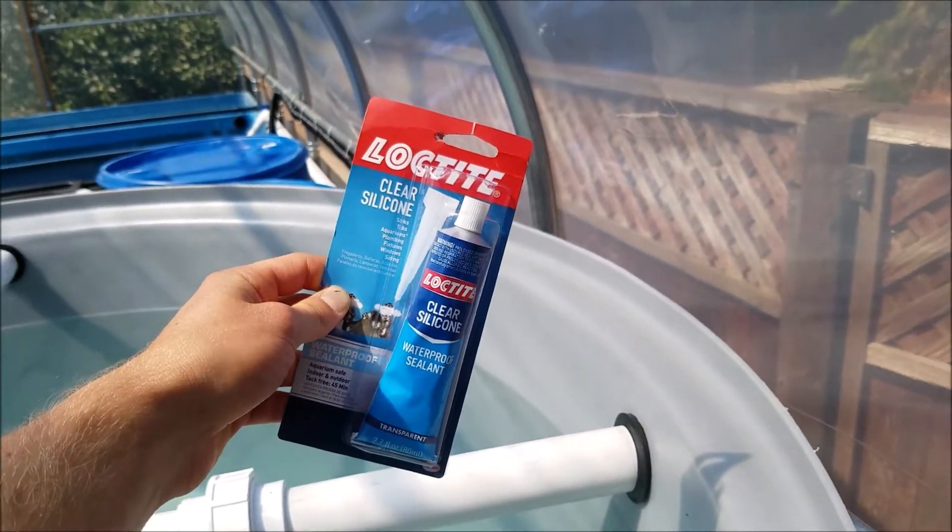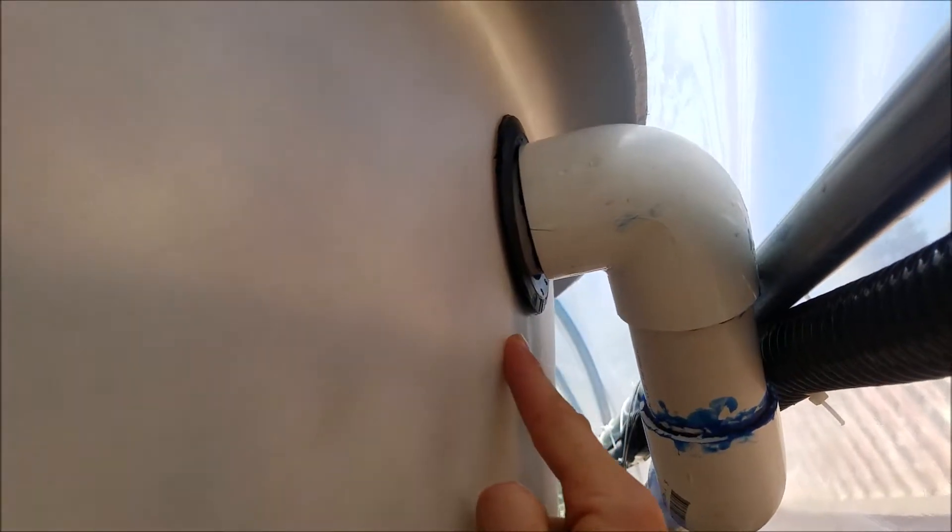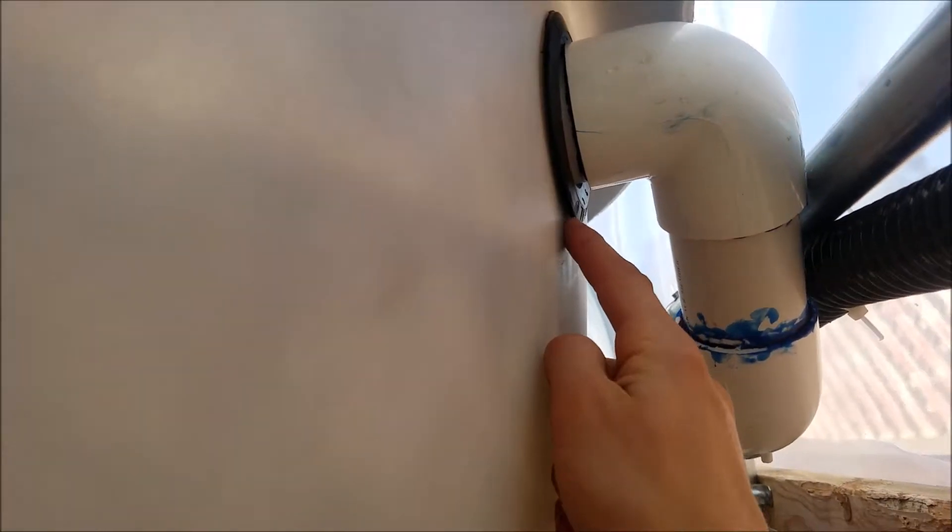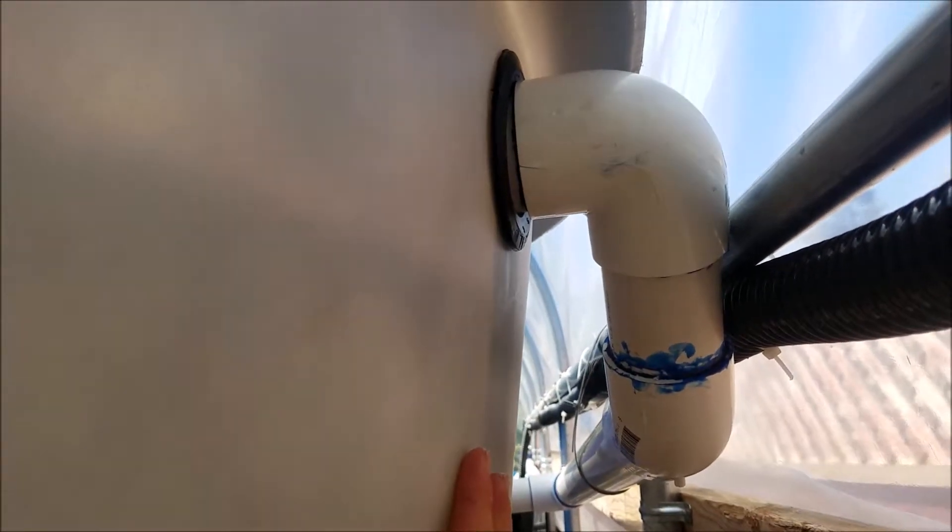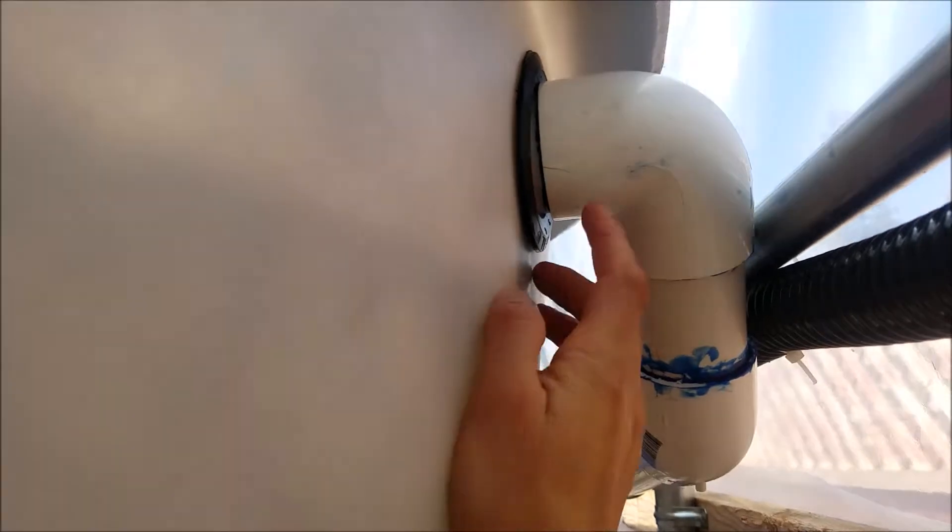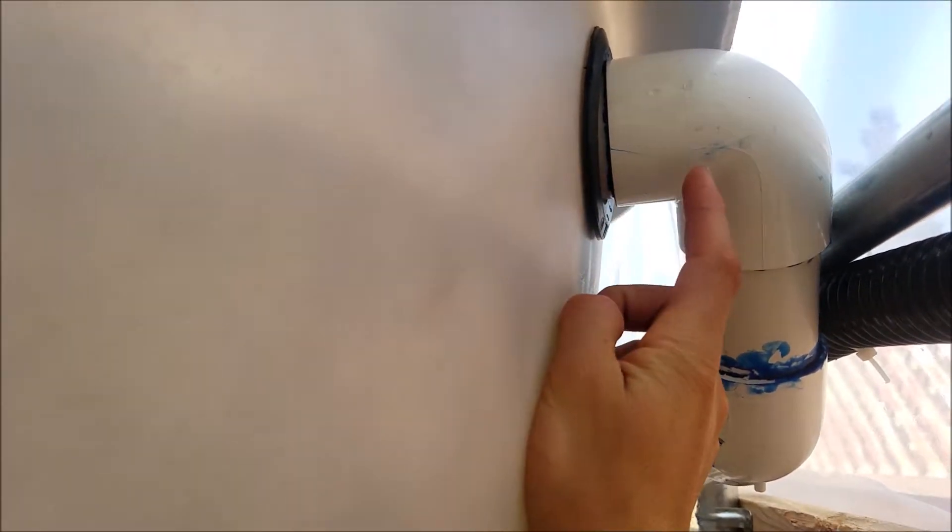This is the uniseal I'll be fixing. As I said, the best would be to replace that whole uniseal, but this is all glued. To take it out I have to drain all the water from here—that's 300 gallons—and then take this out and push it back in or put a new one in.